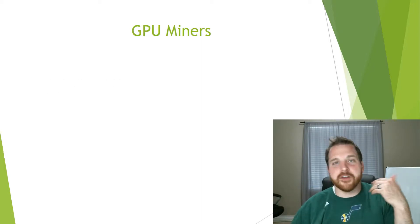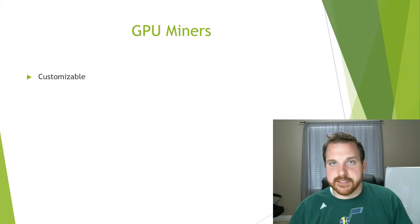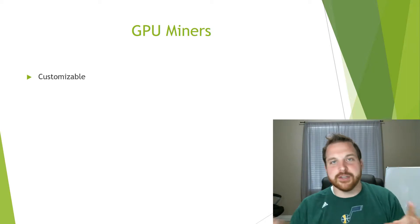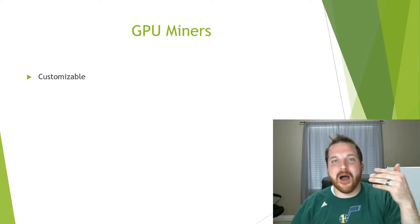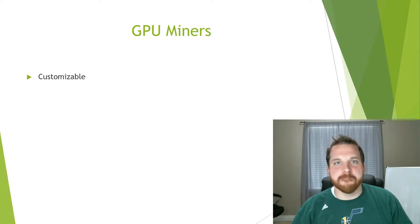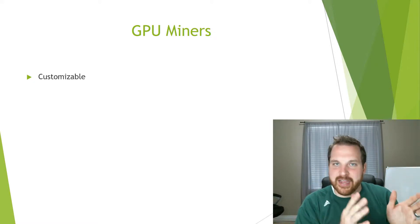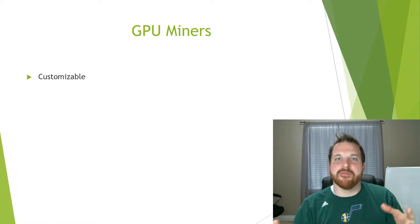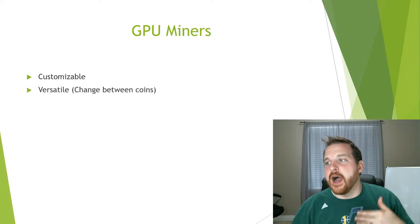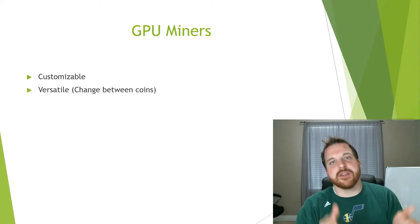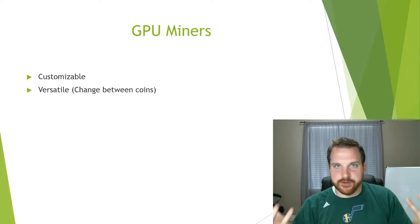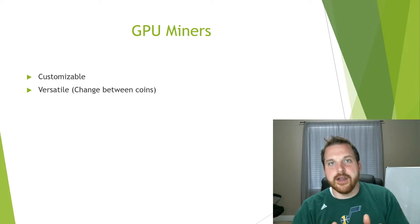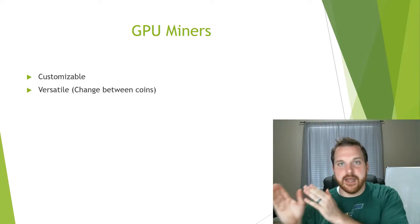GPU miners are customizable — you get to put all the pieces together yourself and pick and choose what you want. That can be overwhelming since you need to know all the parts available, but they are customizable and you can mix and match pieces. This makes it easier to mine without investing in one specific ASIC miner. If you've got a desktop computer at home, you can mine with your current graphics card. They're also versatile — you can switch between the coins you mine. With an ASIC miner you're stuck mining one coin, but with a GPU rig you can download different software and switch.